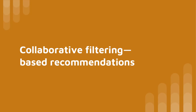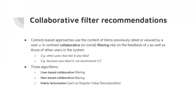Now let's discuss collaborative filtering-based recommendations. With content-based approaches you use the metadata of items previously viewed. With collaborative — or social — filtering, you rely on the history and feedback of the current user as well as all other users in the system. Typical website examples: 'other users who liked item X also liked item Y,' or 'because you liked X, we recommend Y and Z.' There are three algorithms to discuss.